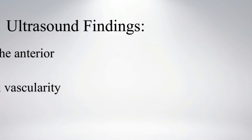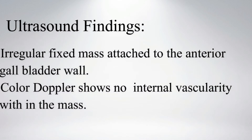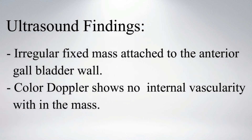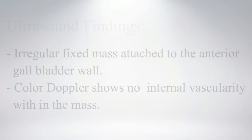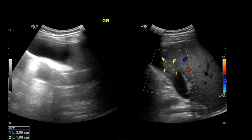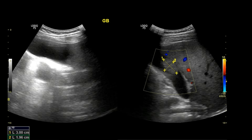On ultrasound, an irregular fixed mass adjacent to the anterior gallbladder wall is noted. Color Doppler shows no definite internal vascularity within the mass. This image shows an irregular oval mass attached to the anterior gallbladder wall.